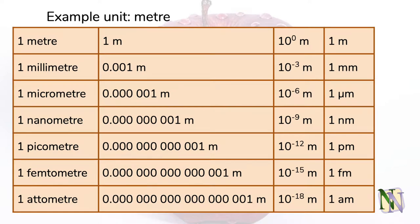Most metric multipliers have indices which are multiples of three. This table shows all the prefixes for quantities smaller than one. Each unit can be written in four different ways: in words, numbers, standard form or symbols.